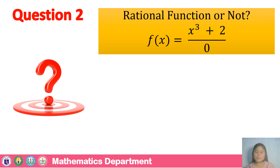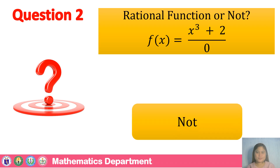Question number 2: F of x is equal to x cubed plus 2 over zero. Rational function or not? That is not a rational function because the numerator is a polynomial while the denominator is not, because it is equal to zero.